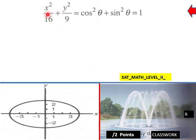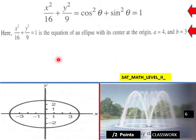So we end up when we add them together: X squared over 16 plus Y squared over 9 equals cosine squared θ plus sine squared θ equals 1. This should look familiar, by the way.